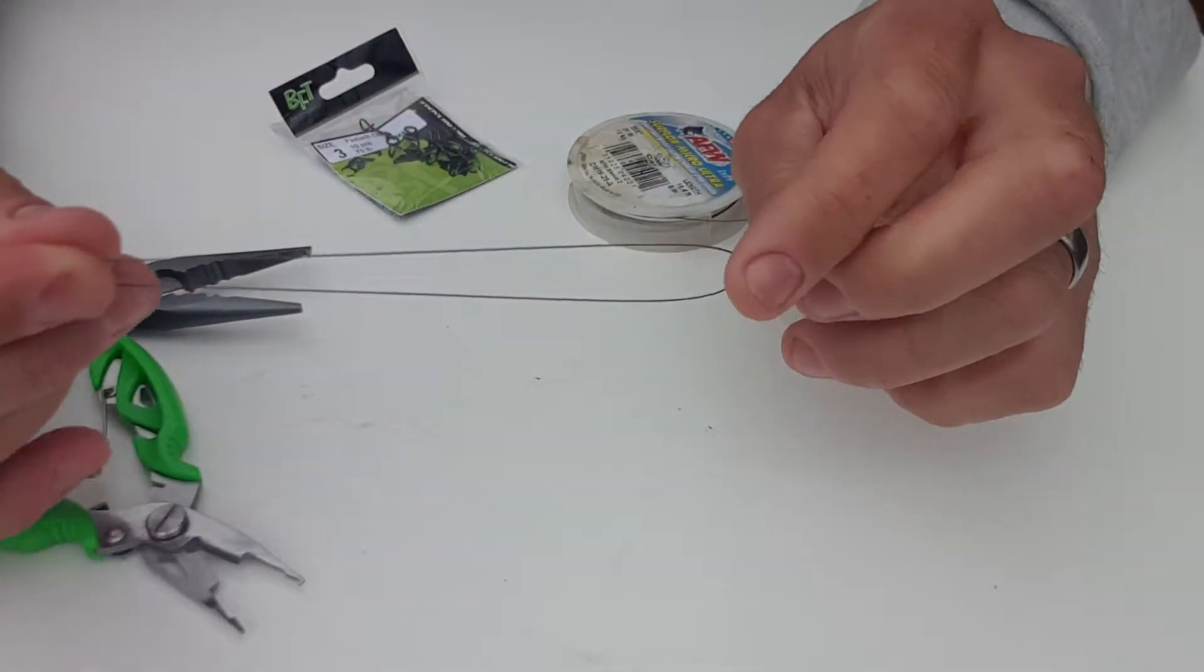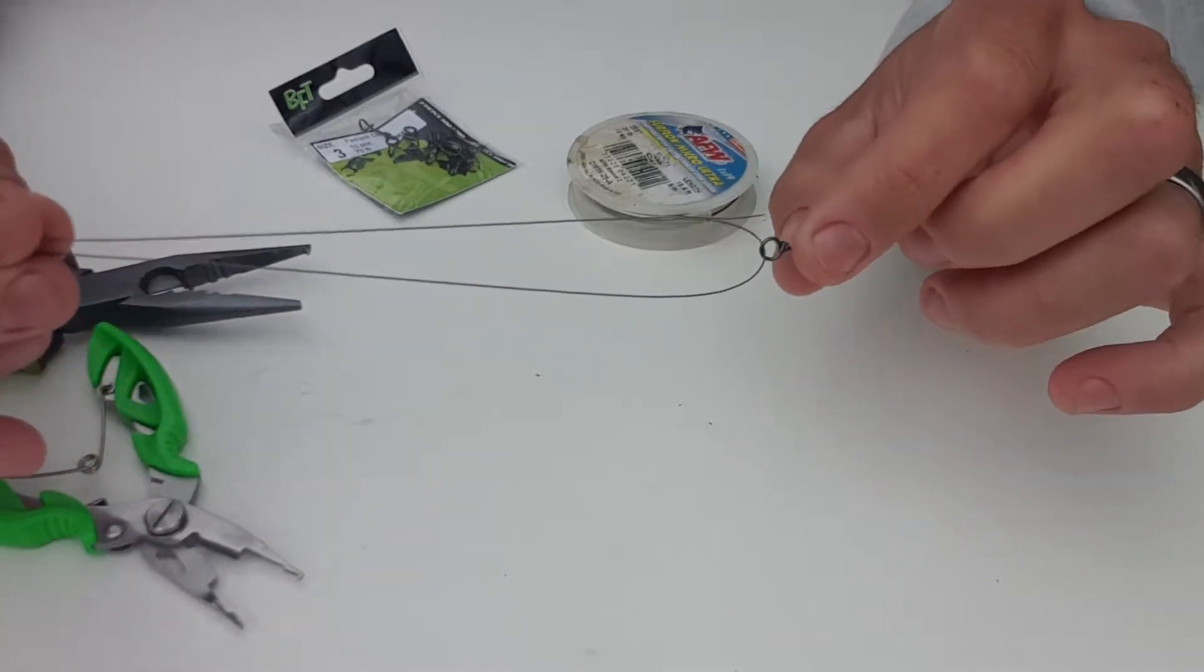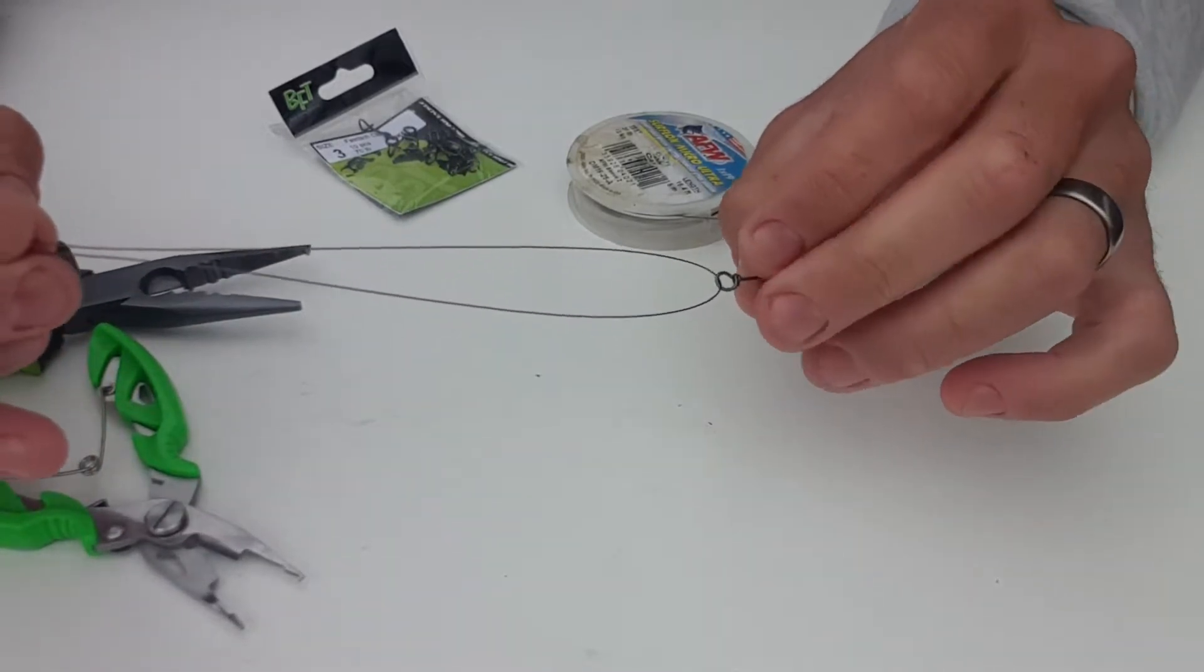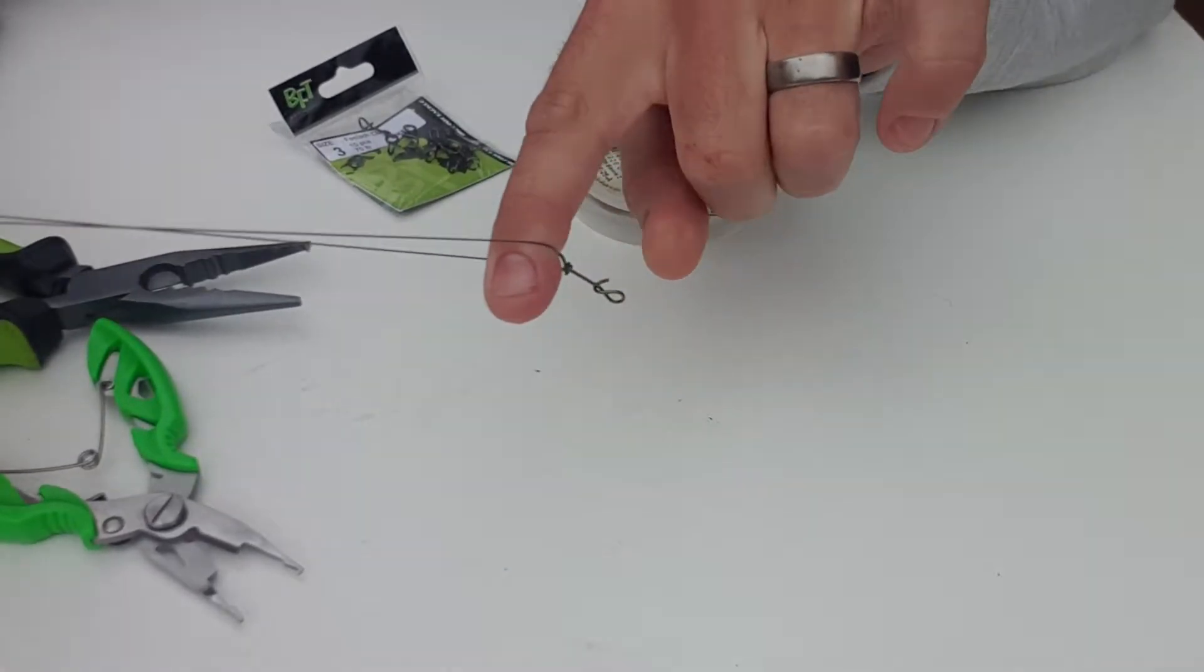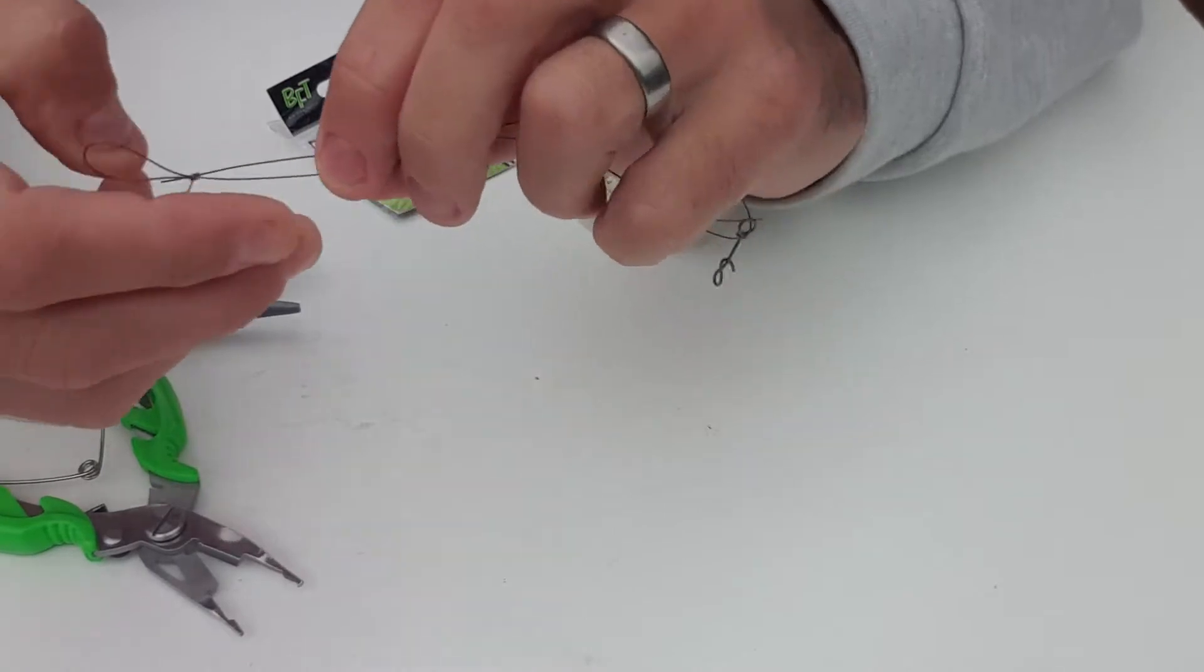So the key is, this is the secret to not get it kinked. Put your trace through, double it over and never pull it tight on that. Always put your finger through if you're going to pull it tight.